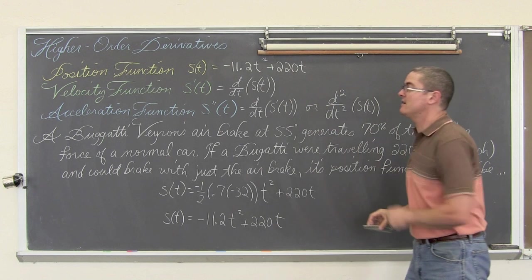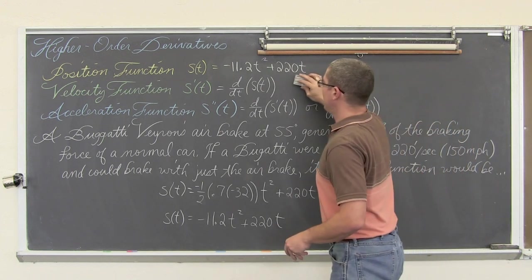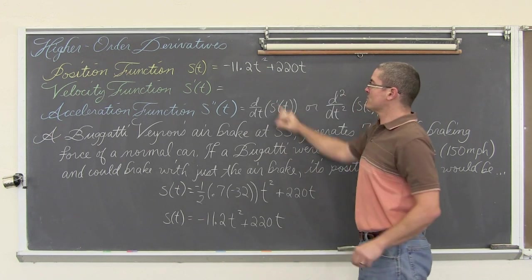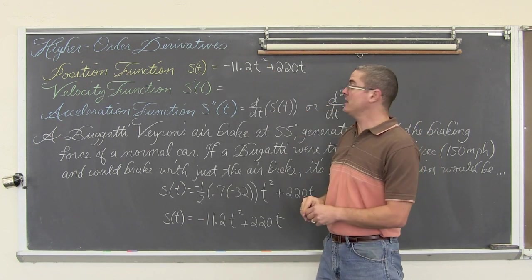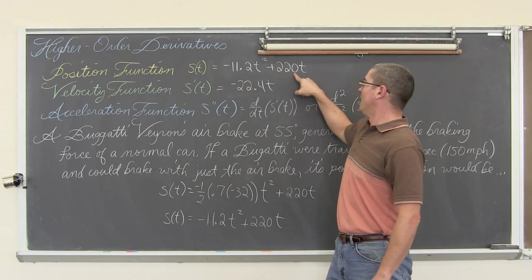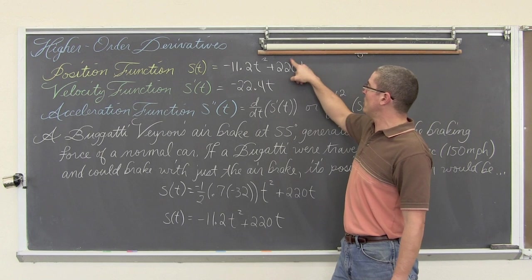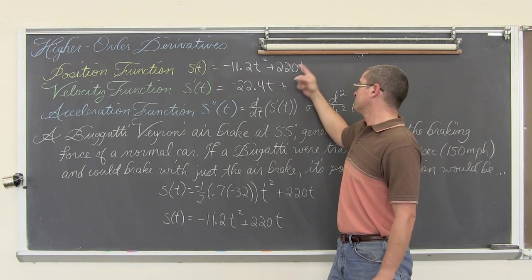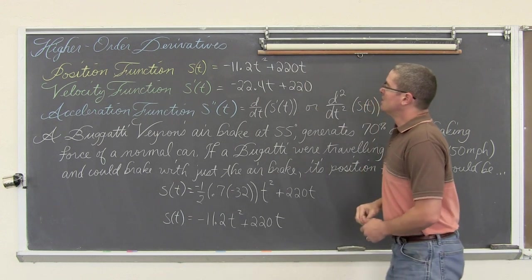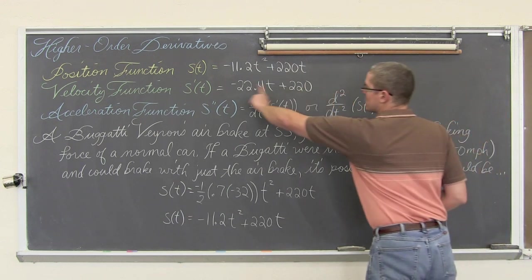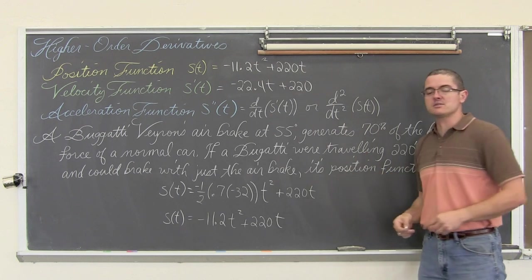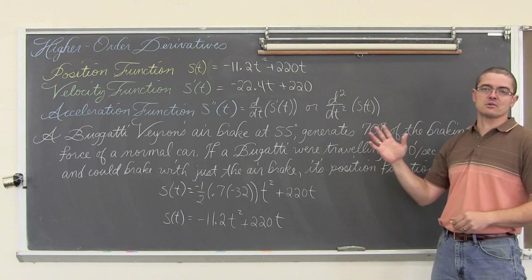If we take that function and we find the first derivative, we have a power rule here. So 2 times negative 11.2 is negative 22.4t. This has a degree of 1. So we are just going to do 1 times 220 and get... or just the derivative of that is just 220. So this function will tell me the speed of the car at any given moment time after the air brake is applied and the car starts to slow.